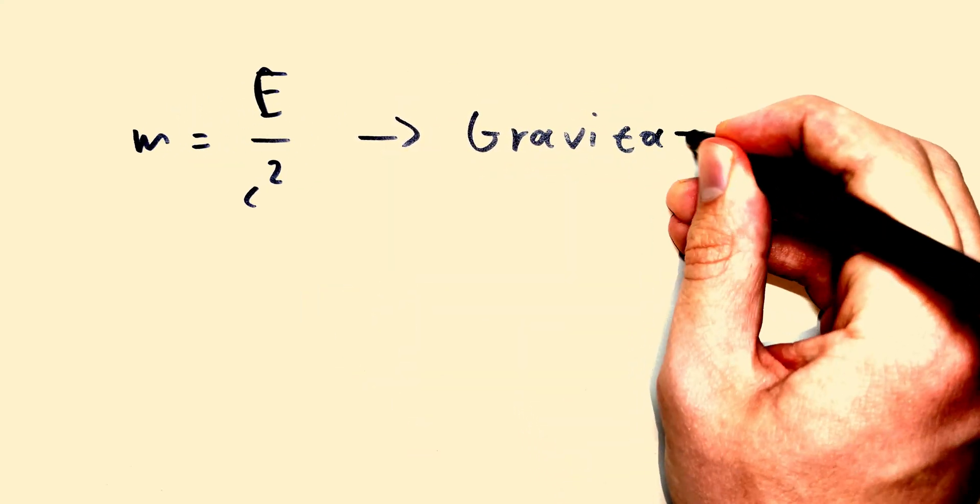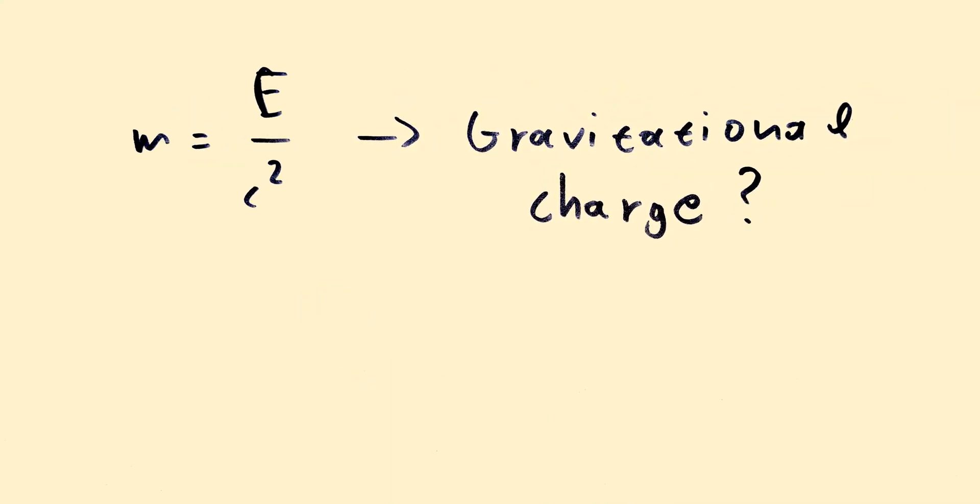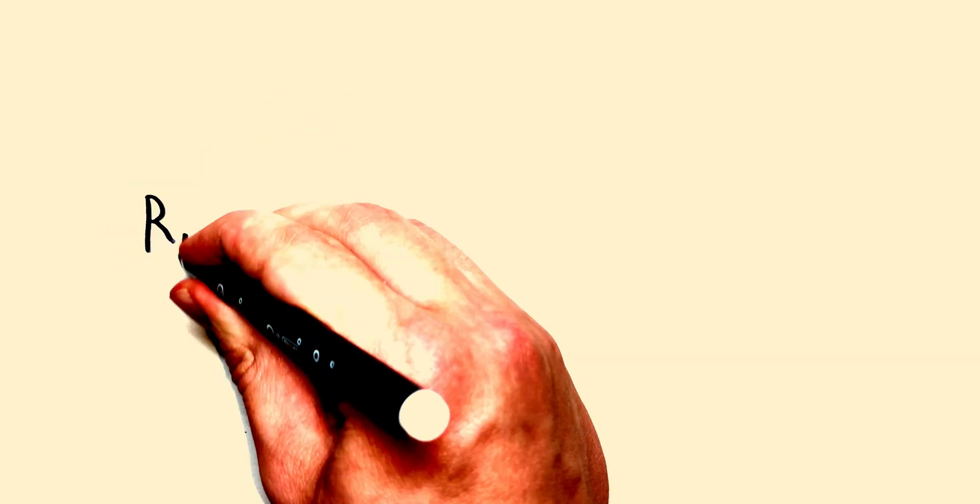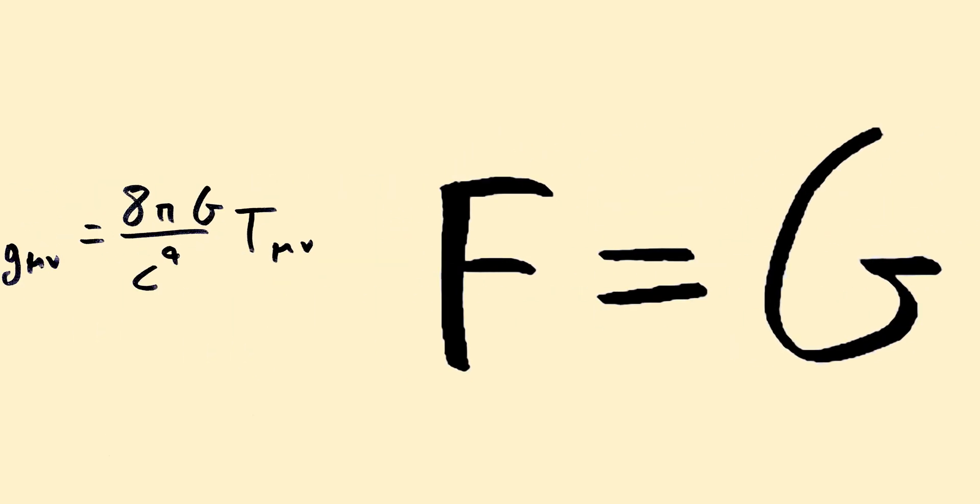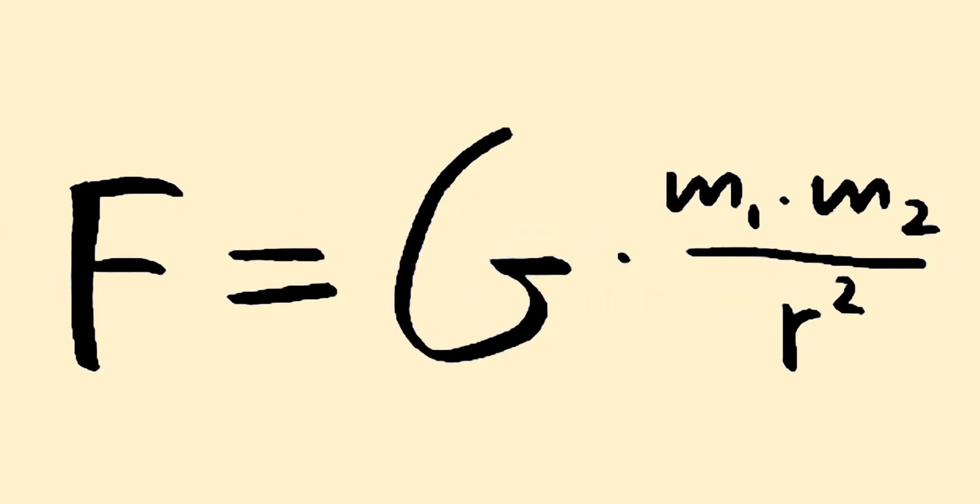How does m equal E over c squared explain gravitational charge though? Easy. Look at the gravitational equations. This is the complete picture of how gravity works. Not this. This. Not this. This.